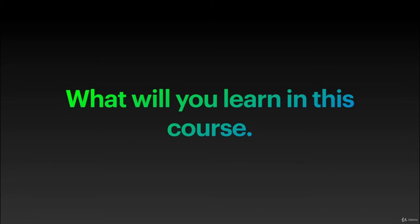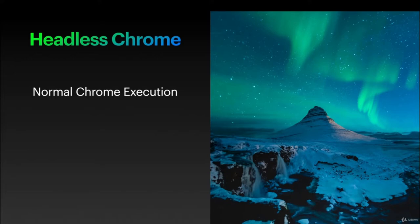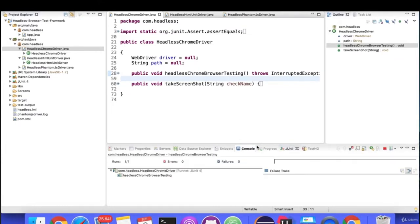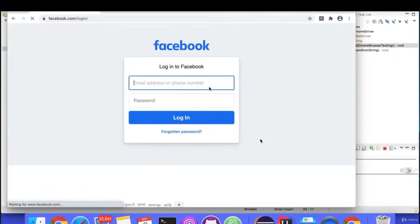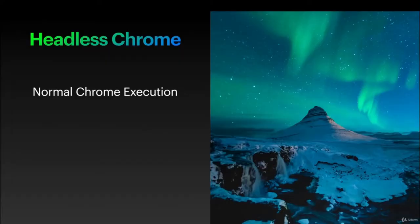Let's look at normal Chrome execution versus headless Chrome. In normal Chrome execution, when you run your test it simply launches a Chrome browser — you will see a GUI. If you see, it took 5.2 seconds and it had launched a Chrome browser with a graphical user interface where you can see Chrome has launched and the test gets executed.